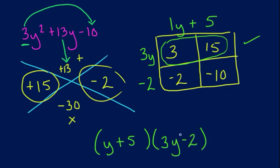Now, if you have them switched around and it comes out 3y minus 2 and then the other one is y plus 5, that's still okay, you're still fine. That's still the same answer, so you're not going to get it wrong on a test.